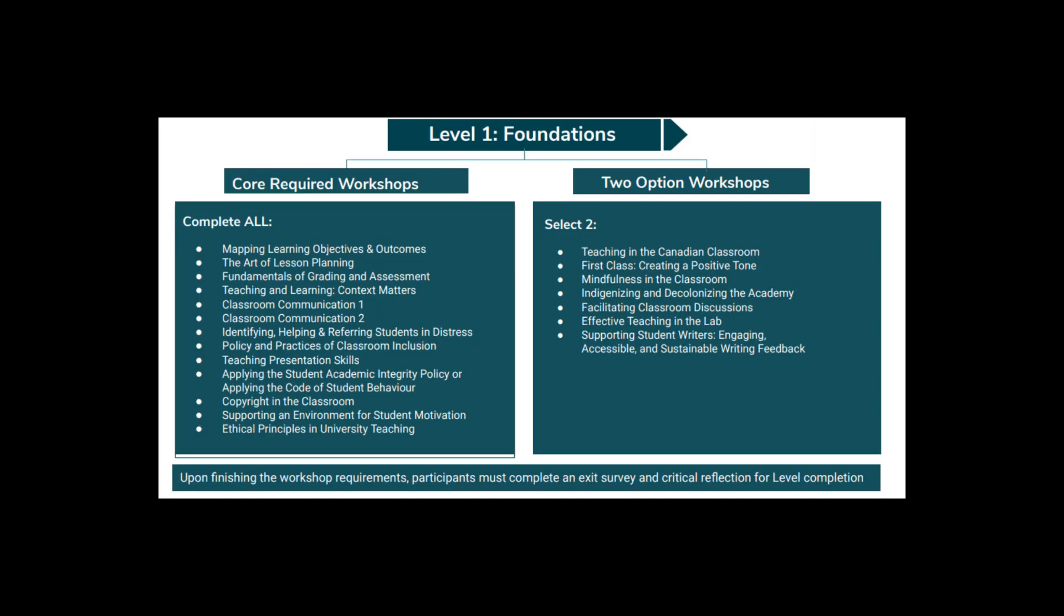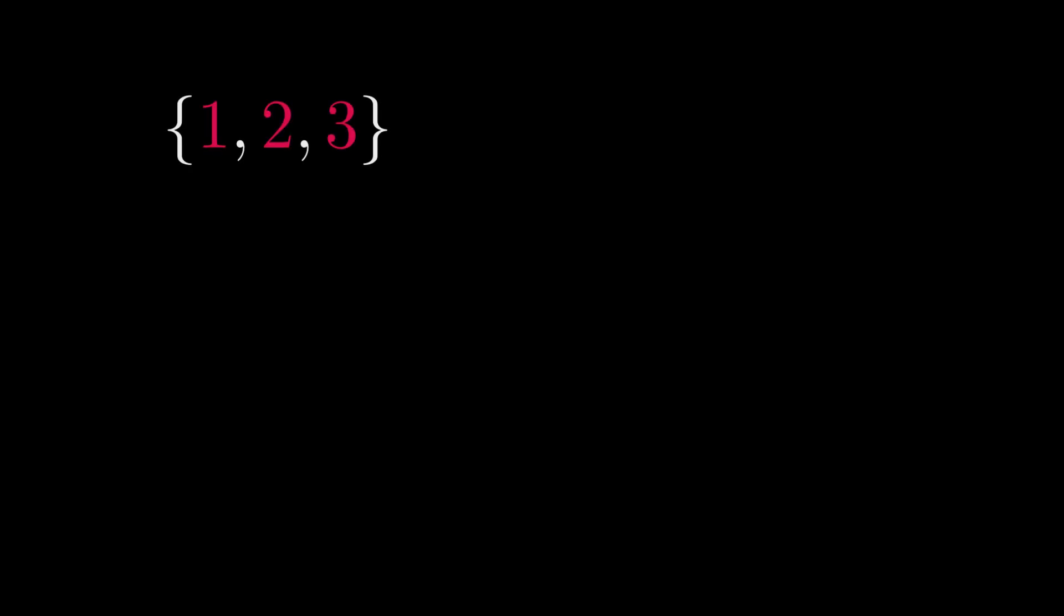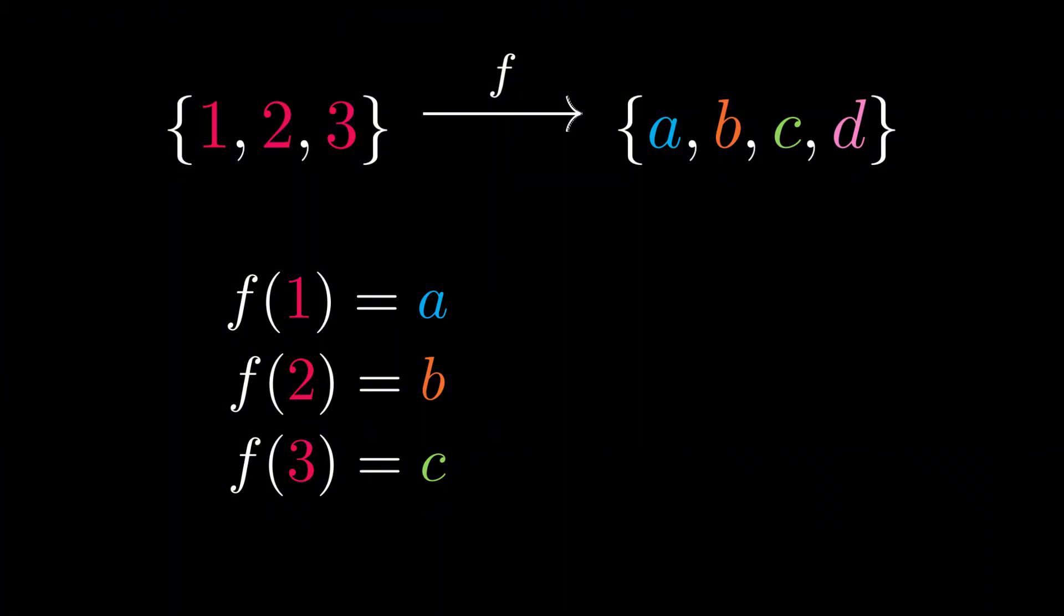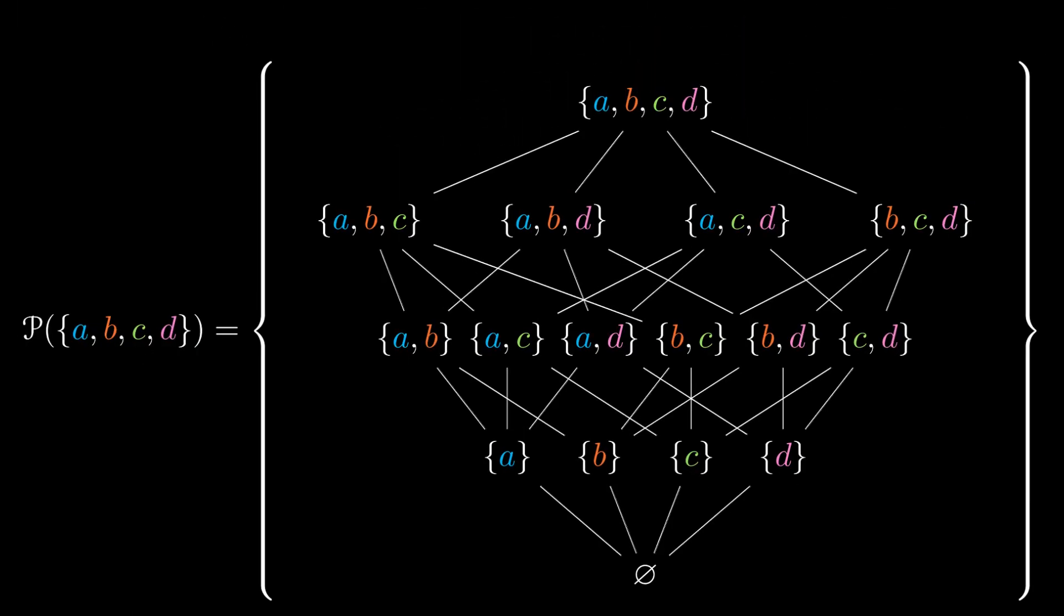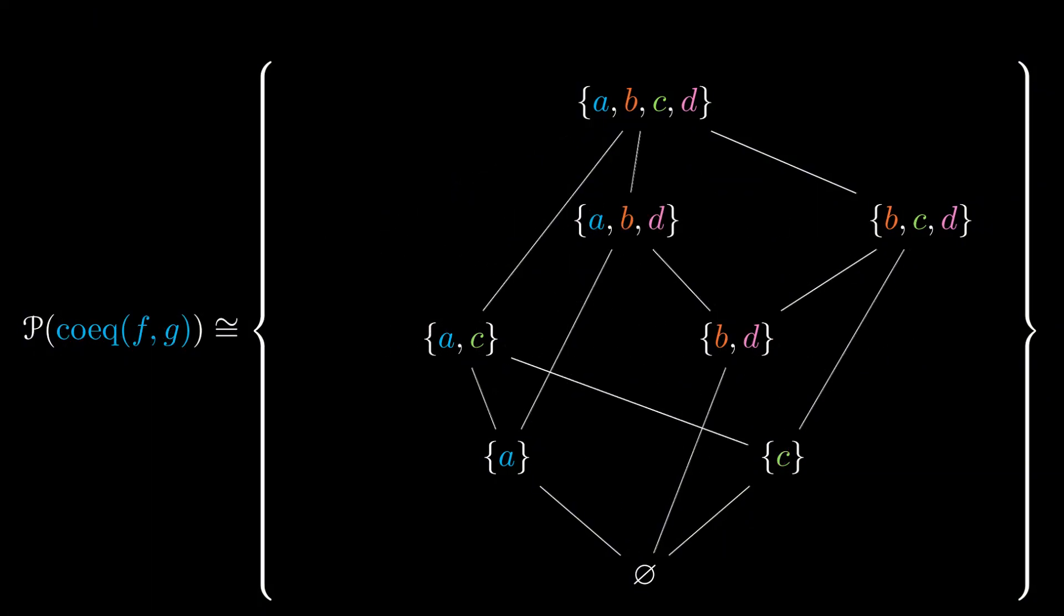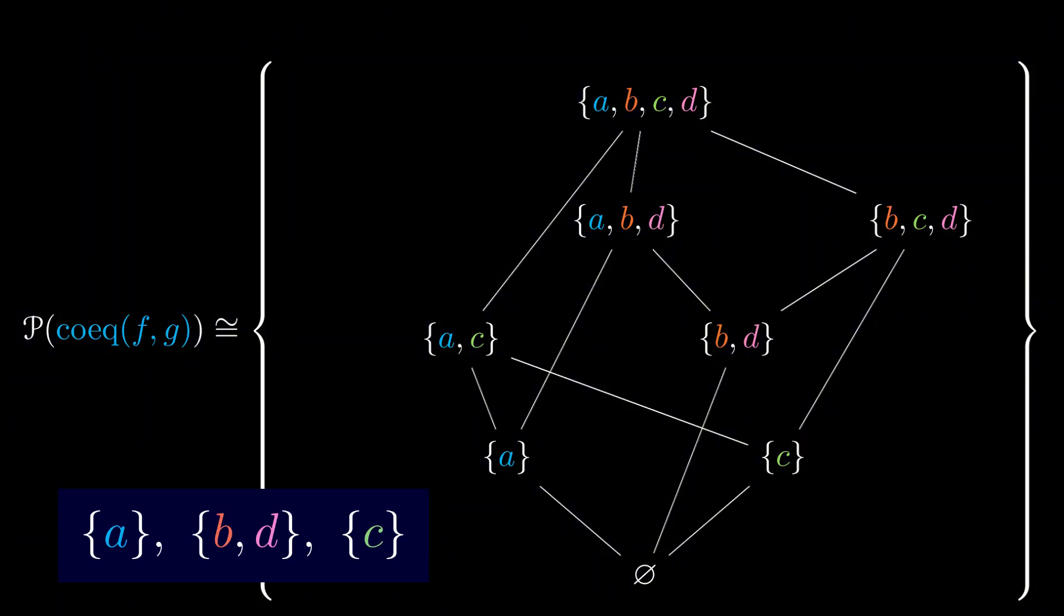The graduate teaching and learning program told me that examples can be extremely illuminating. Suppose x is the three-element set containing 1, 2, and 3, and y is the four-element set consisting of a, b, c, and d. Define the function f by sending 1, 2, and 3 respectively to a, b, and c, and then define a function g that sends 1, 2, and 3 respectively to a, d, and c. Out of the 16 total subsets of y, you can check that only the following eight persist in the coequalizer. By looking at this graphic, we can see that the second smallest subsets are the following three. Notice in particular that one of them isn't a singleton in y.